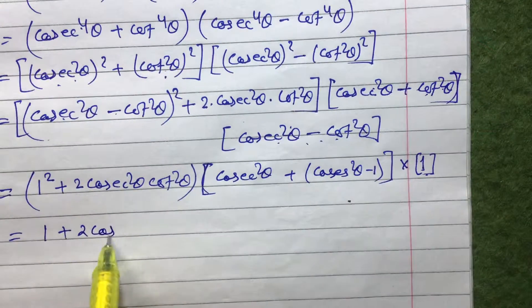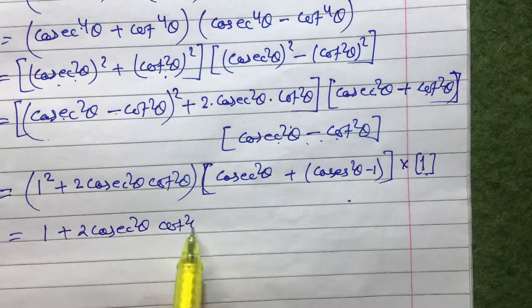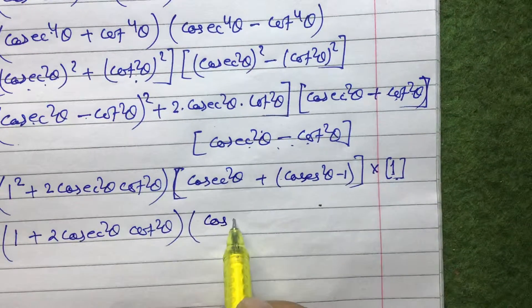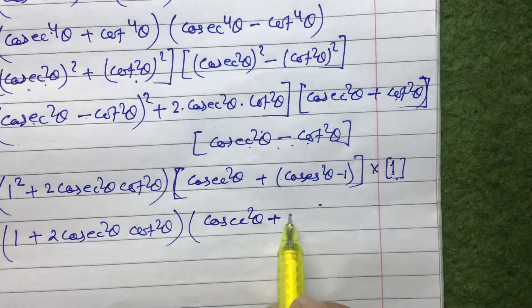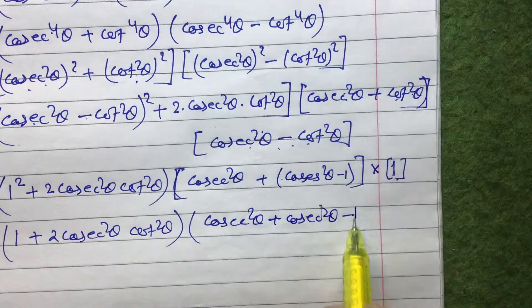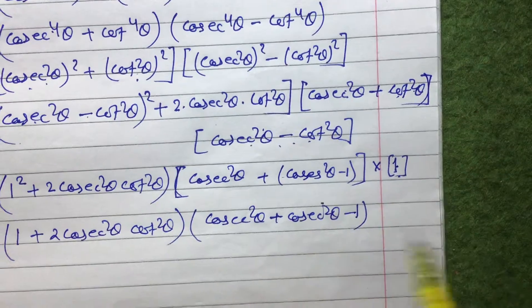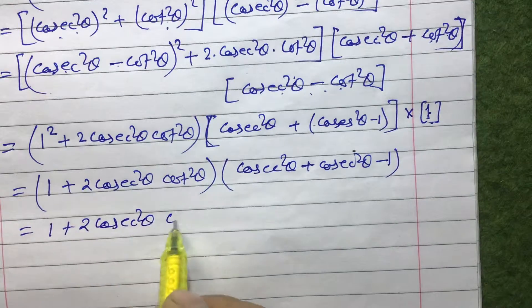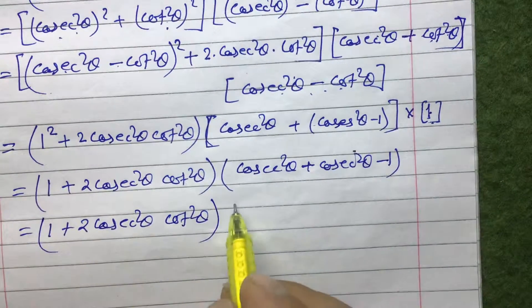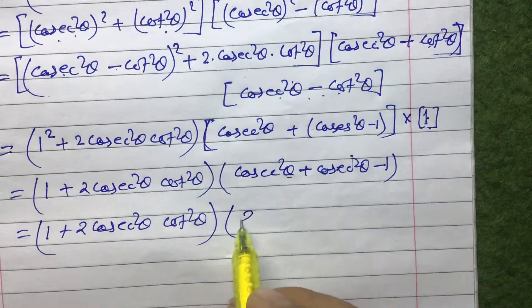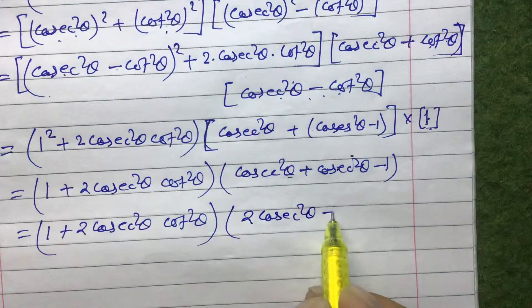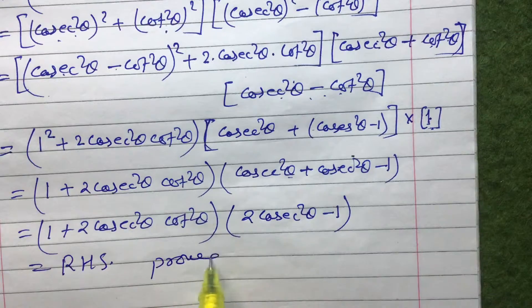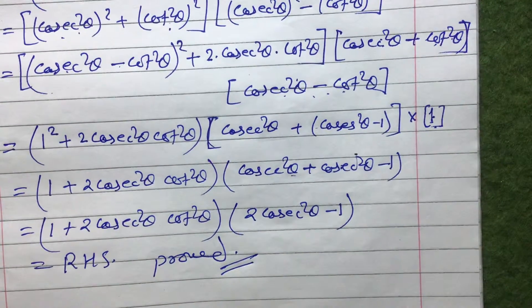So we have: (1 + 2cosec²θ·cot²θ)(2cosec²θ - 1), which is exactly our right-hand side. Hence the identity is proved.